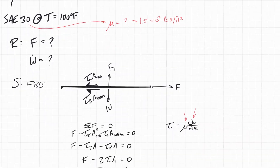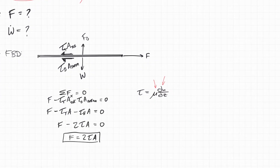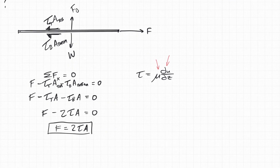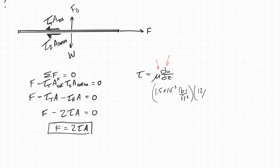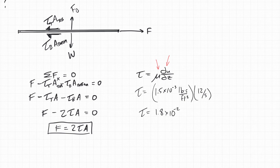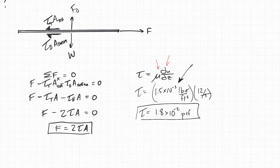So I can plug both of those into get tau. We have: tau equals 1.5 times 10 to the negative 3 pound-seconds per foot squared, times 12 per second. That gives 1.8 times 10 to the negative 2 pounds per foot squared. The 'per second' cancels with the 'second,' leaving pounds per foot squared. Note that on your exam I will give you a viscosity that is easy to find — in this case I used an oil and couldn't find a reliable value.